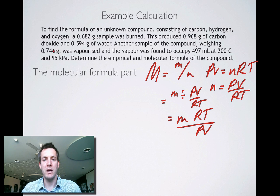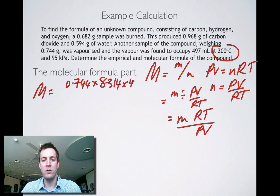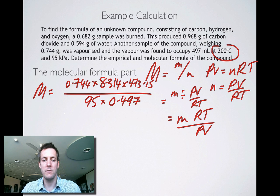So what's the mass? Well, the mass is our sample that we vaporized. So the molar mass equals 0.774 multiplied by 8.314. That's the gas constant from our datasheet. Temperature was 200 degrees centigrade, so that is 473.15 Kelvin, because we add 273.15 to our degrees centigrade, divided by the pressure, 95, multiplied by the volume, 0.497, because this is in milliliters and not liters. And if you plug those numbers into your calculator, you get about 61.98.